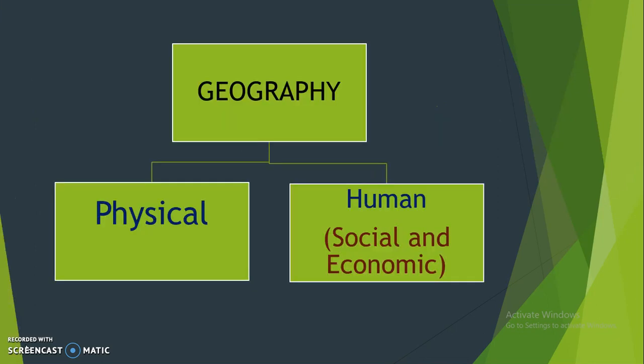We can learn geography in two phases. One is physical, and the other is human, which is social and economic. In Physical Geography, you can learn about mountains, planets, climate, and natural vegetation — all the things that nature has created.